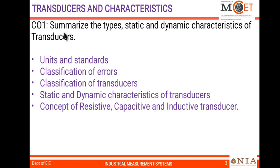The first unit, corresponding to CO1, covers Transducers and Characteristics. Topics include units and standards, because whenever we want to indicate any physical, chemical, or biological quantity, we need units to identify what type of parameter is being measured. Different standards commonly accepted worldwide by industries are also covered. Additionally, the classification of errors — the different types of errors that occur during measurement — will be included.